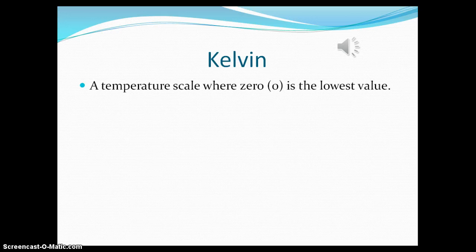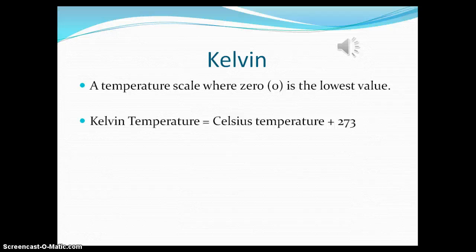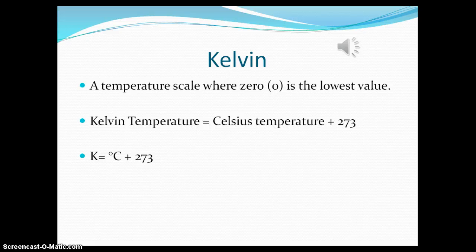Kelvin. A temperature scale where zero is the lowest possible value. The equation for Kelvin is the Kelvin temperature equals degrees C plus 273, or K equals degrees C plus 273.